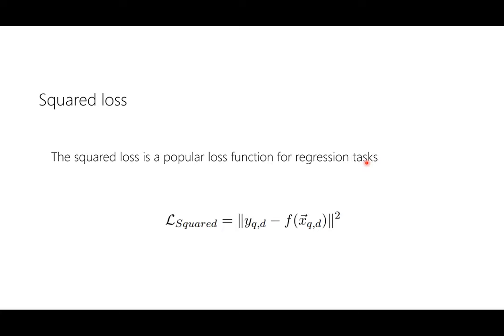For regression tasks, one of the most common loss functions is simple squared loss. The squared loss is straightforward: if your model produces a vector F(X, Q, D) and the ideal output is Y — both vectors — you find the element-wise difference, take the square, and sum it over the vector length. That's the squared loss function.